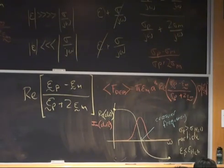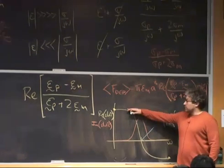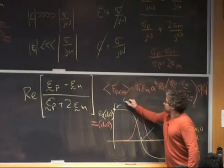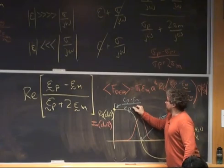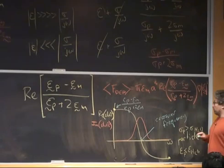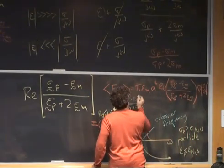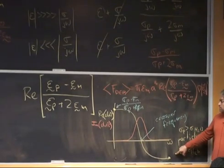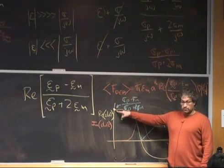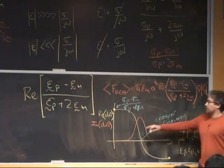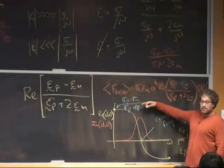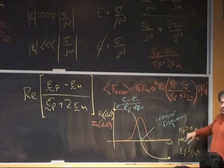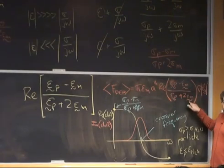Is the yellow line symmetric? Will the peak magnitude be the same on both sides? It won't. In the limit, the low-frequency value is given by (sigma_p minus sigma_m) over (sigma_p plus 2 sigma_m), and the high-frequency limit is the same expression but with epsilons. The highest the real part can ever be is 1, when epsilon_p is infinitely bigger than epsilon_m. The lowest it can be is minus one-half, when epsilon_p can be ignored and you have minus epsilon_m over 2 epsilon_m.